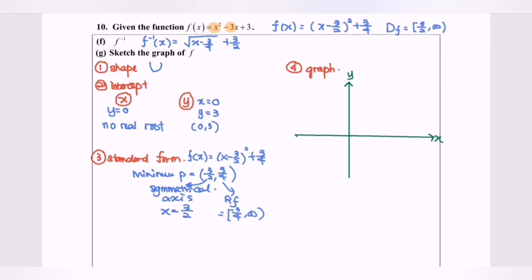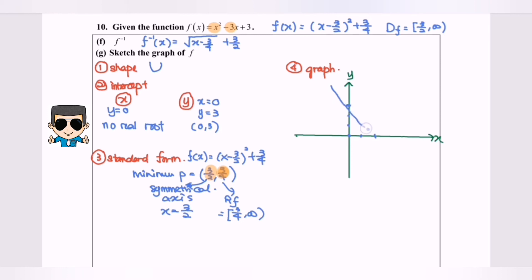Now let's sketch the graph. The shape is a U-shape. There is no x-intercept. The y-intercept is (0, 3). The minimum point is at x equals 1.5 and y equals 3 over 4, which is less than 1, so the minimum point is plotted accordingly. The graph is drawn as a U-shape with these features. For this case, the situation is not 1-to-1, so there is no f inverse.